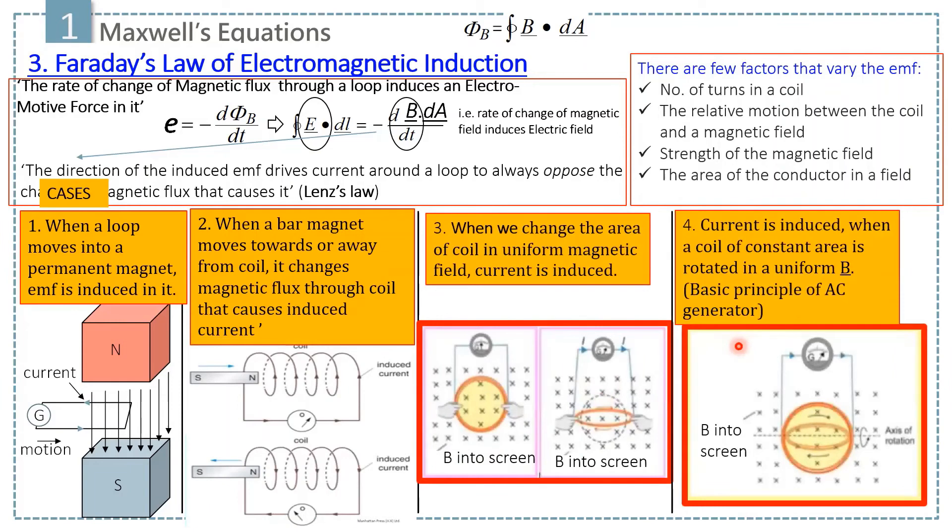In the fourth case, current is also induced when a coil of constant area is rotated in a uniform magnetic field. This is the basic principle of AC generator.